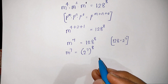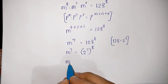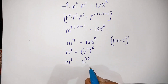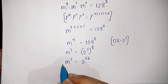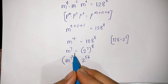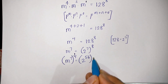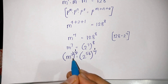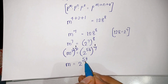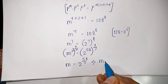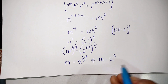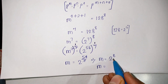So M to the power 7 is equal to 2 to the power 56, since 7 times 8 is 56. To remove this power of 7 we take the power 1 by 7 on both sides. The 7 and 7 get cancelled, giving M is equal to 2 to the power 56 divided by 7, which equals 2 to the power 8. And 2 to the power 8 is 256, so M is equal to 256 is our final answer.